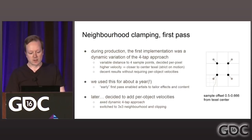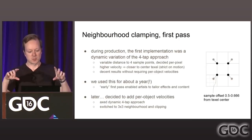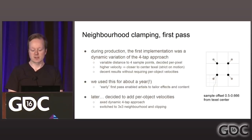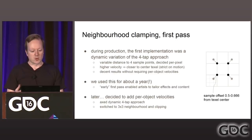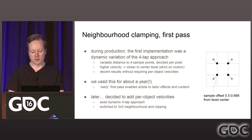The first implementation of neighborhood clamping for INSIDE was a dynamic variation of Sousa's four-tap approach. I used a variable distance to the four sample points decided per pixel, where higher velocity in the current fragment would result in the four taps inching closer to the center texel. This meant it was pretty strict on motion — when stuff was moving fast, we wouldn't allow a large variation from the center texel. This gave decent results without needing a per-object velocity buffer, which we didn't have at that time. We used this approach for about a year, and it enabled artists to tailor effects and content to the unique properties of having a temporal algorithm that also eliminates noise from stochastic effects.